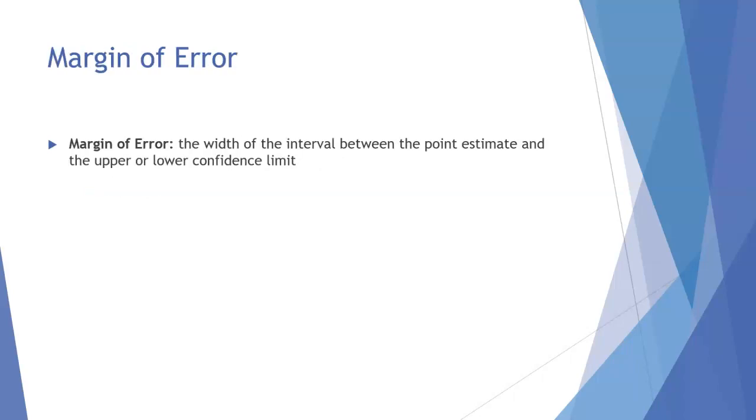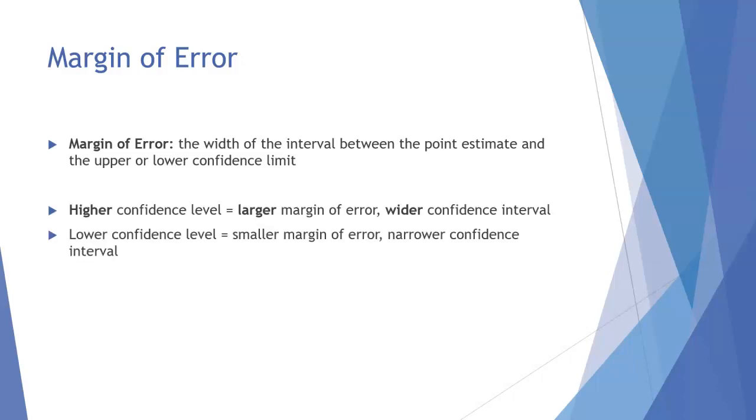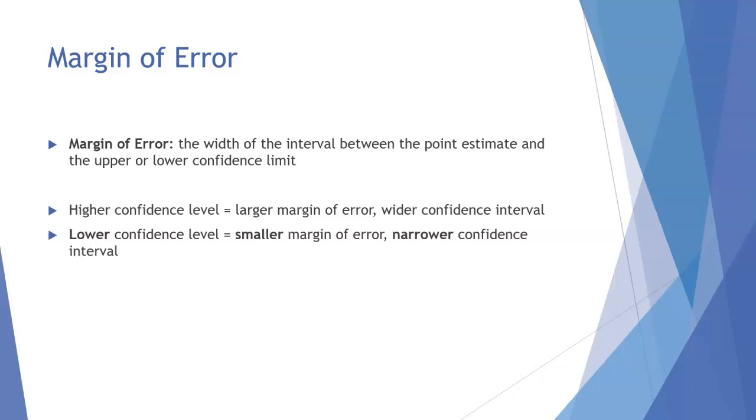The margin of error is a little bit trickier. The margin of error is the width of the interval between the point estimate and the upper and lower limits that we're going to calculate. Here's something that students sometimes get tripped up on: a higher confidence level is going to lead to a larger margin of error and a wider confidence interval. A lower confidence level is going to lead to a smaller margin of error and a more narrow confidence interval.